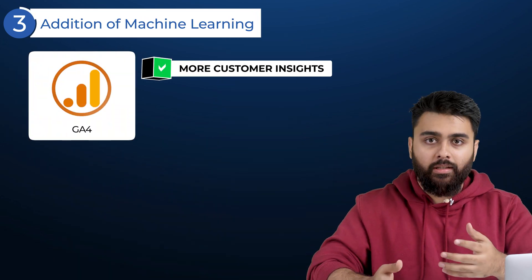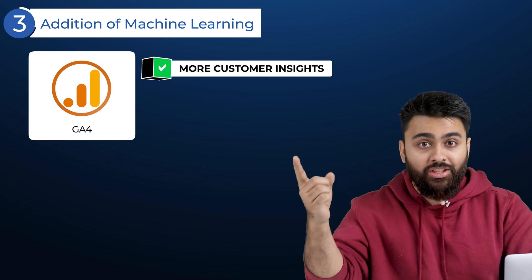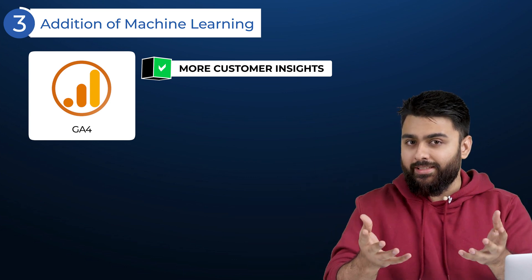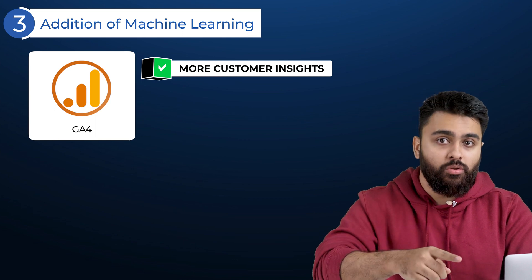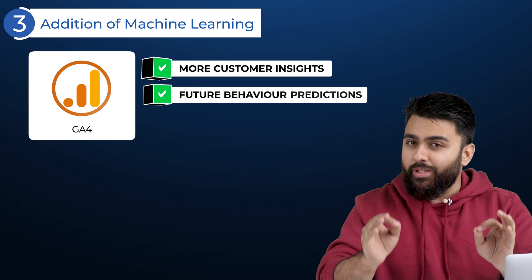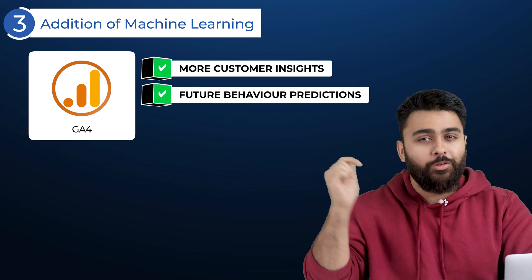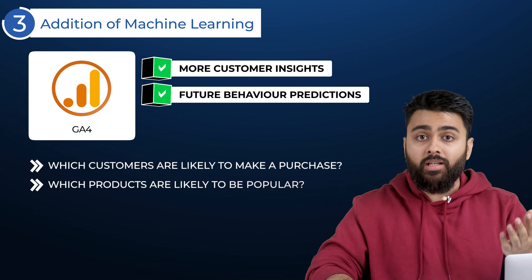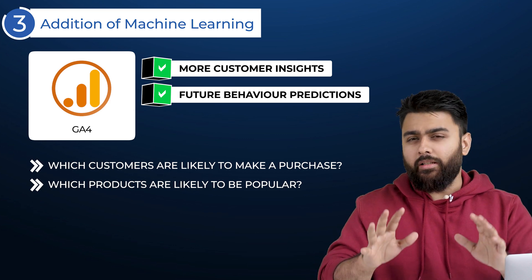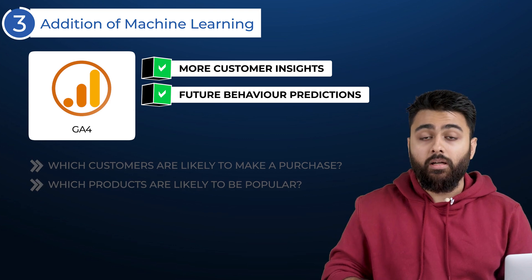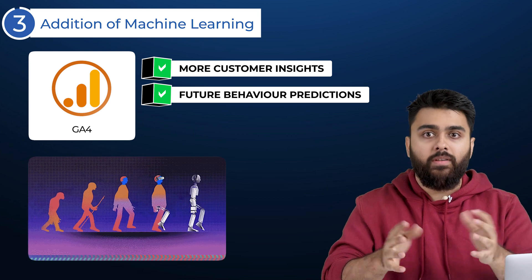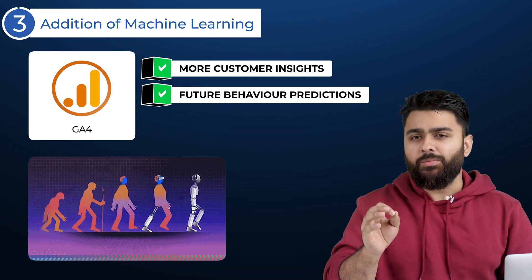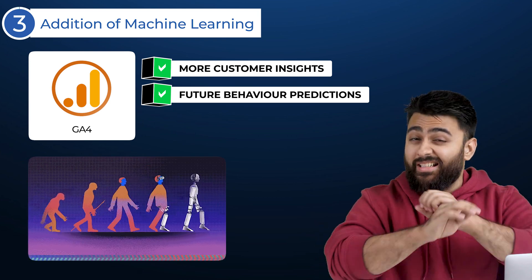Third: Addition of Machine Learning. GA4 is unique because it can use machine learning to provide insights and predictions about your customer's behavior. This is like your assistant not only telling you what happened in your store, but also making educated guesses about what might happen in the future — for example, which customers are likely to make a purchase or which products are likely to be popular. It remains to be seen how accurate these predictions will be, but we are seeing AI improve at a rapid pace, and it's possible that at some point this might become a game-changing feature.